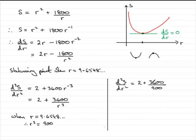And 900 goes nicely into 3600 four times, so you end up with 2 plus another 4, which is equal to 6.